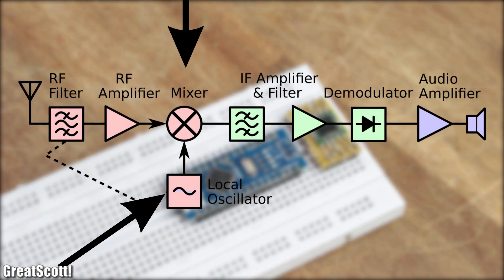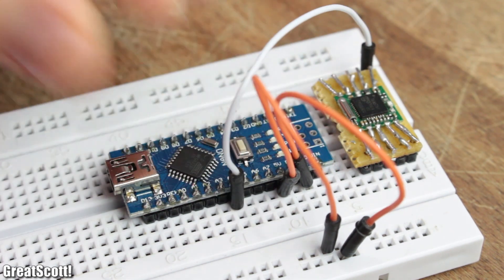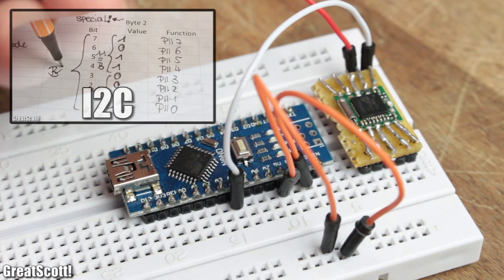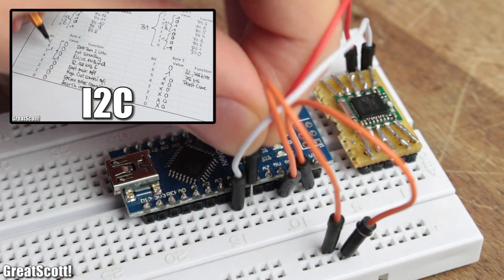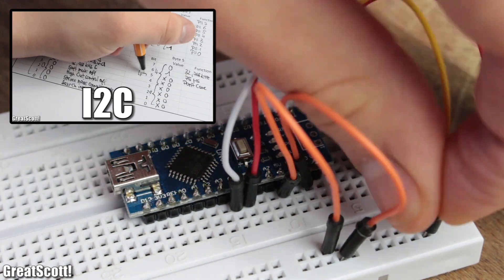And such a superheterodyne receiver uses a local oscillator mixed with the radio frequency signal to create an intermediate frequency signal, which is then filtered, amplified and demodulated. It all sounds complicated but the IC is fairly easy to control.